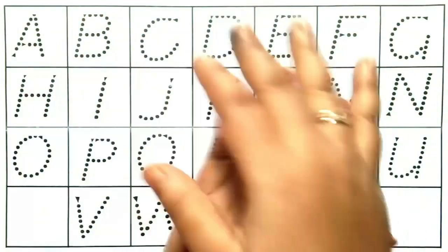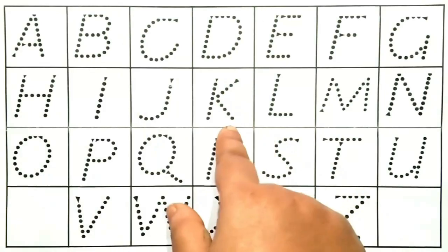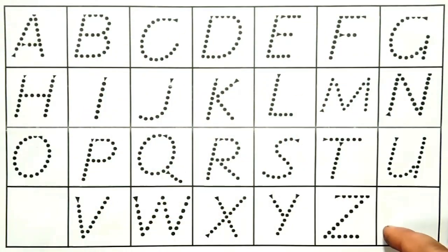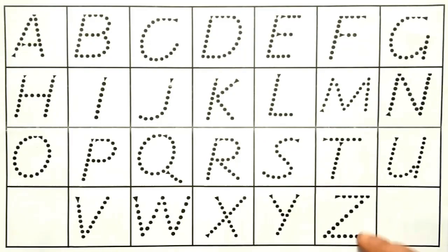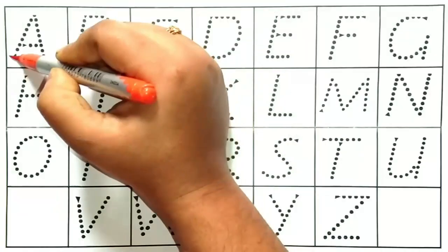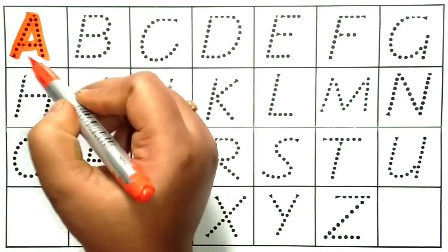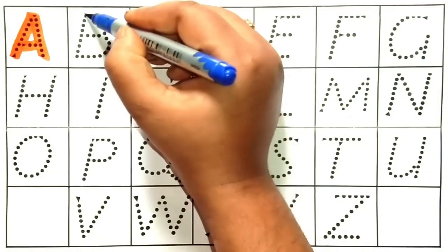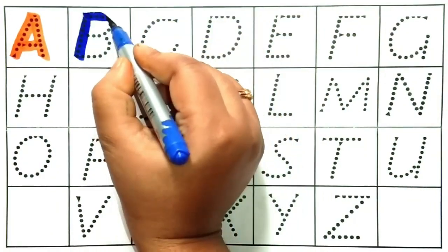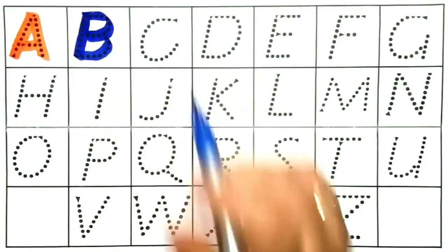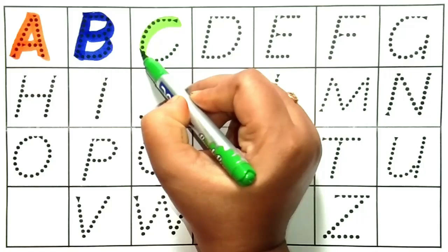Alphabets. Let's go kids, let's start the video. A — A for astronaut. B — B for boat.